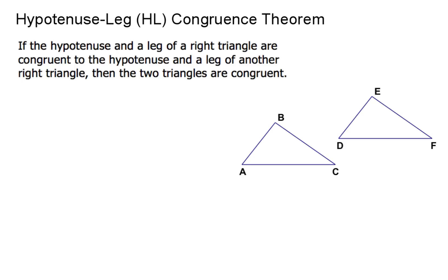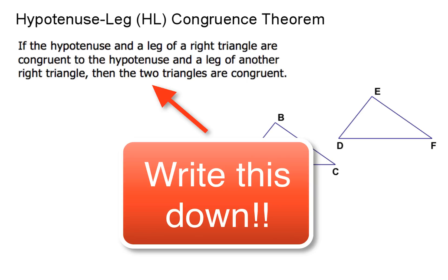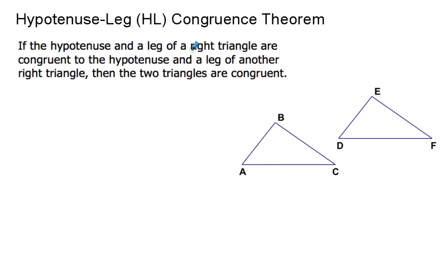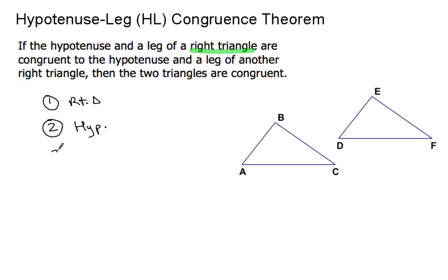Our next one is the hypotenuse-leg congruence theorem. It states: if the hypotenuse and the leg of a right triangle — and that phrase 'right triangle' is key, so make sure you underline that — are congruent to the hypotenuse and the leg of another right triangle, then the two triangles are congruent. There are three conditions that must be met: first, you've got two right triangles; second, the hypotenuse of each triangle is congruent; and third, a leg of one triangle is congruent to the leg of another triangle.